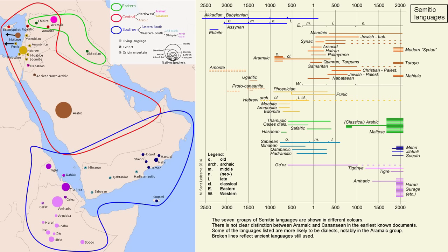The Semitic languages are a branch of the Afro-Asiatic language family. They are spoken by more than 330 million people across much of West Asia, the Horn of Africa, and latterly North Africa, Malta, West Africa, and in large immigrant and expatriate communities in North America, Europe, and Australasia.